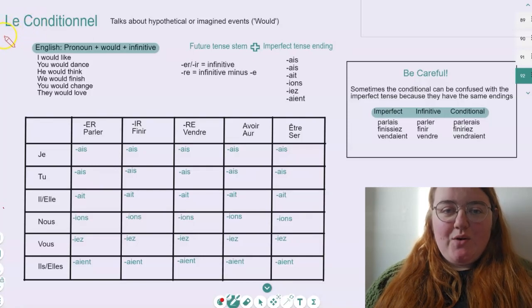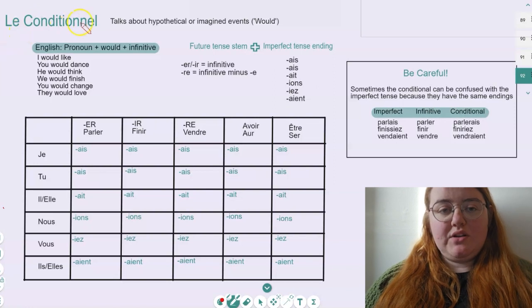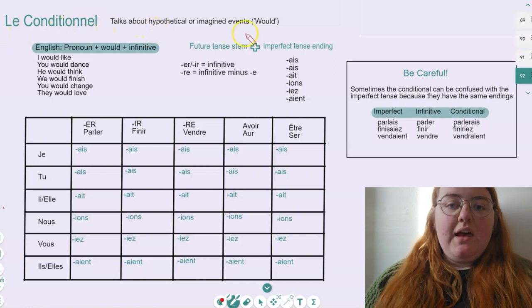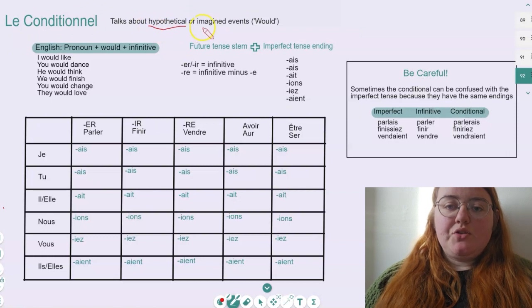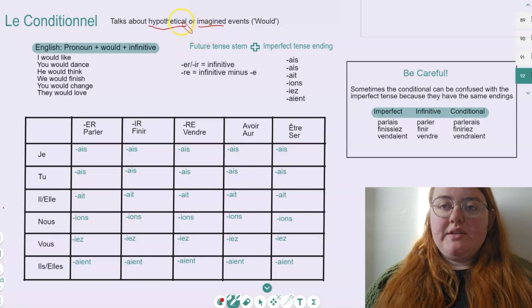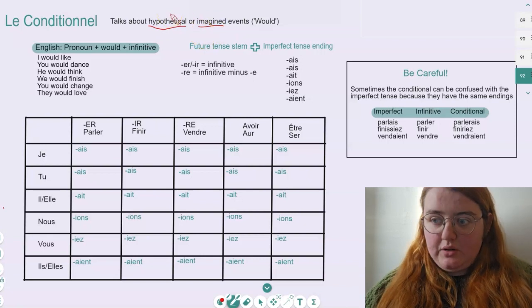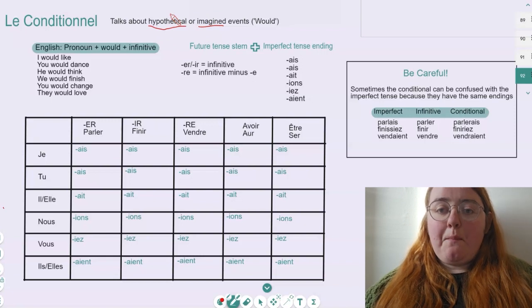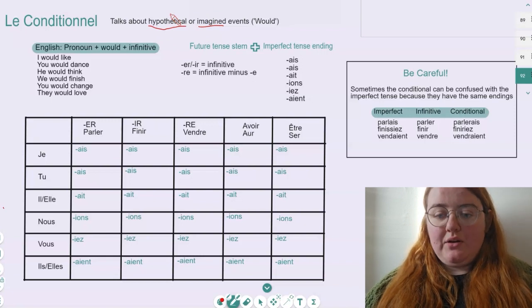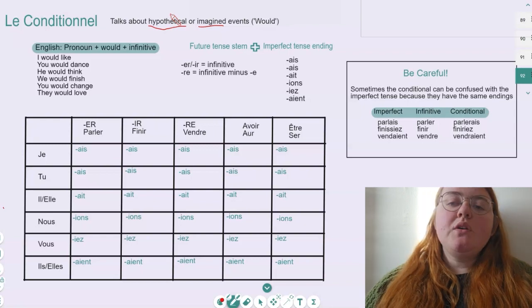Hello, so today we are going to talk about the conditional tense, which in French is called le conditionnel. As we can see by the definition here, this tense talks about hypothetical or imagined events. So what this means is we're not talking about something that is definitely going to happen. We're talking about something that might happen or could happen if something else happens as well.